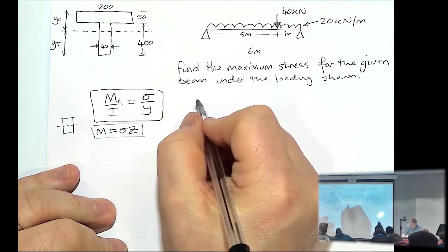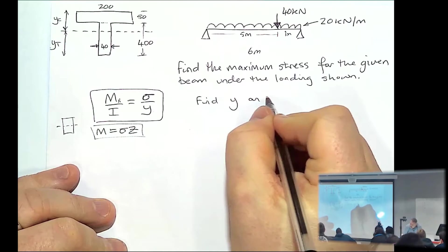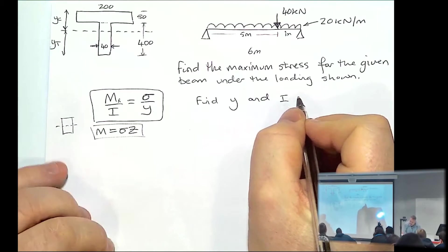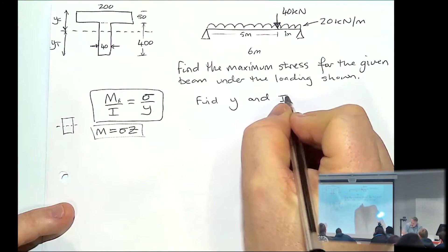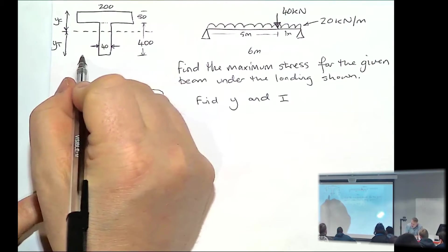So we'll find this Y and I value first. Take moments around the bottom.